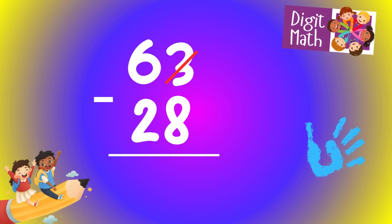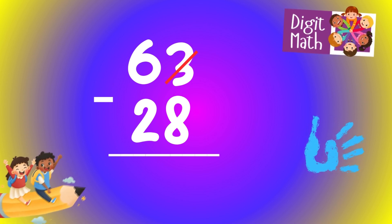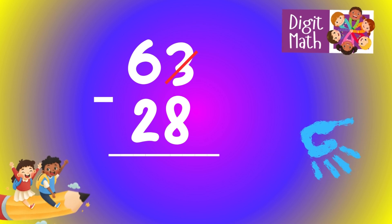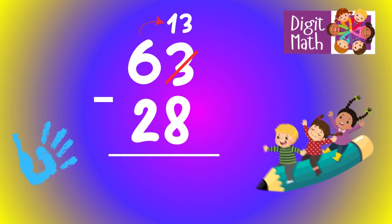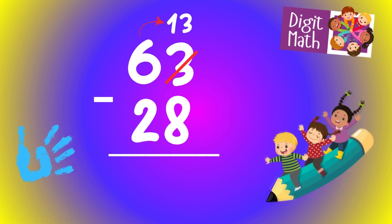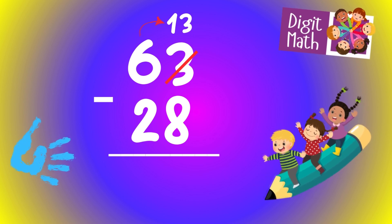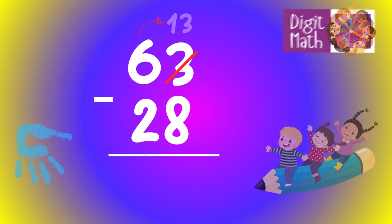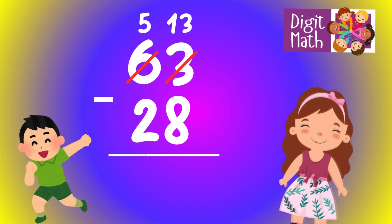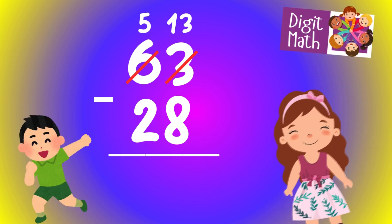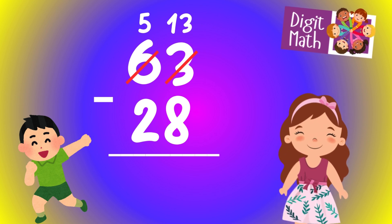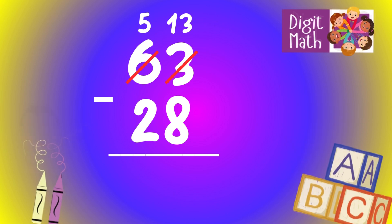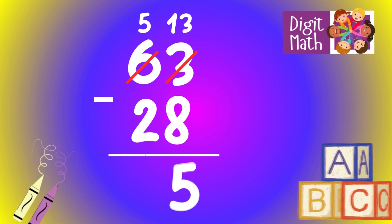Let's go to the answer. In the units column, we have 3 minus 8. Since it's not possible to subtract 8 from 3, we need to borrow from the tens column. In the tens column, we have 6. We take 1 from the tens, leaving 5 in the tens column, and turning the units column into 13. Now, we have 13 in the units column. Subtract 8 from 13, which equals 5.